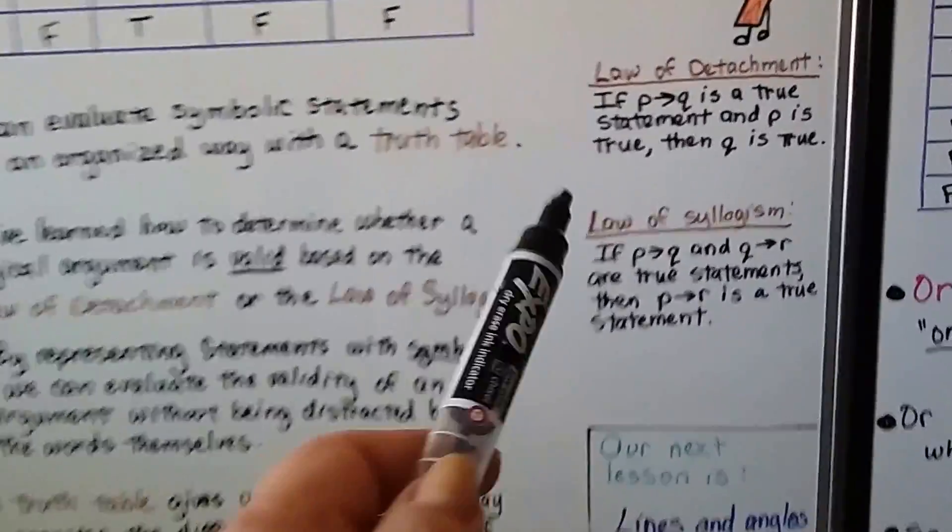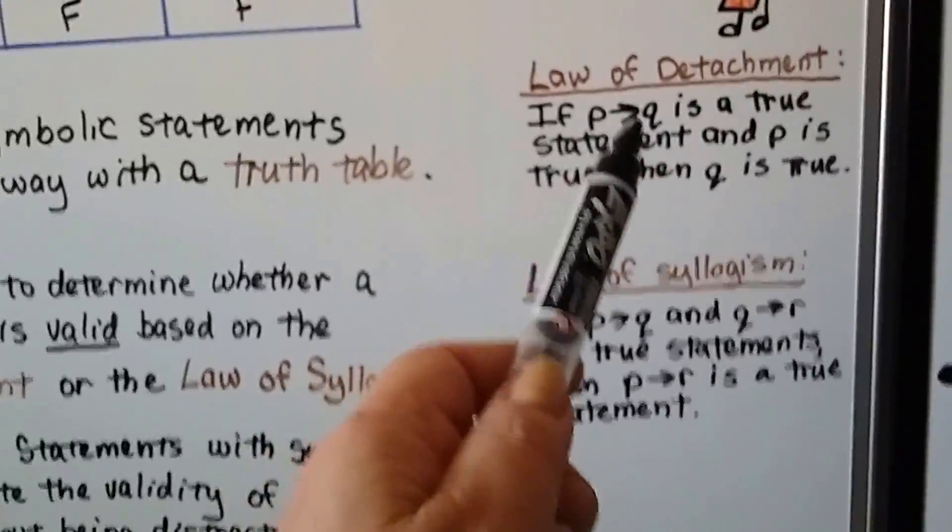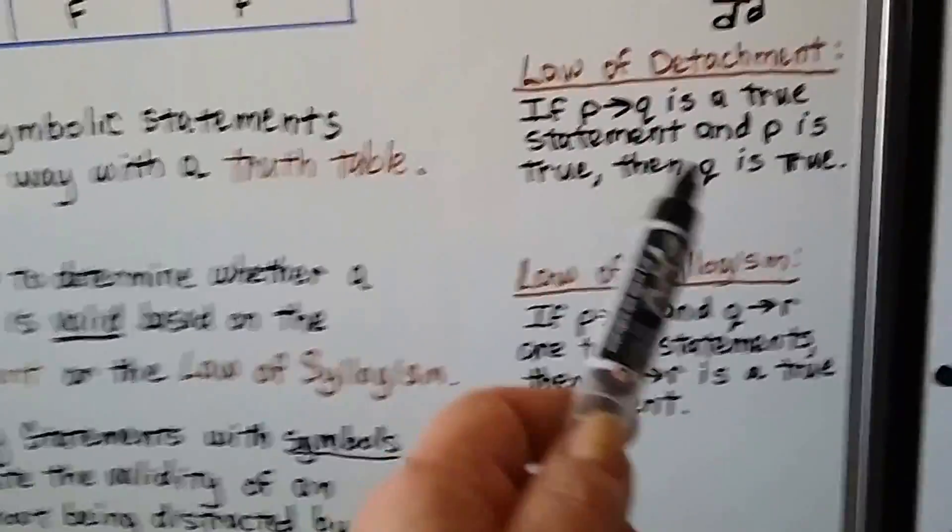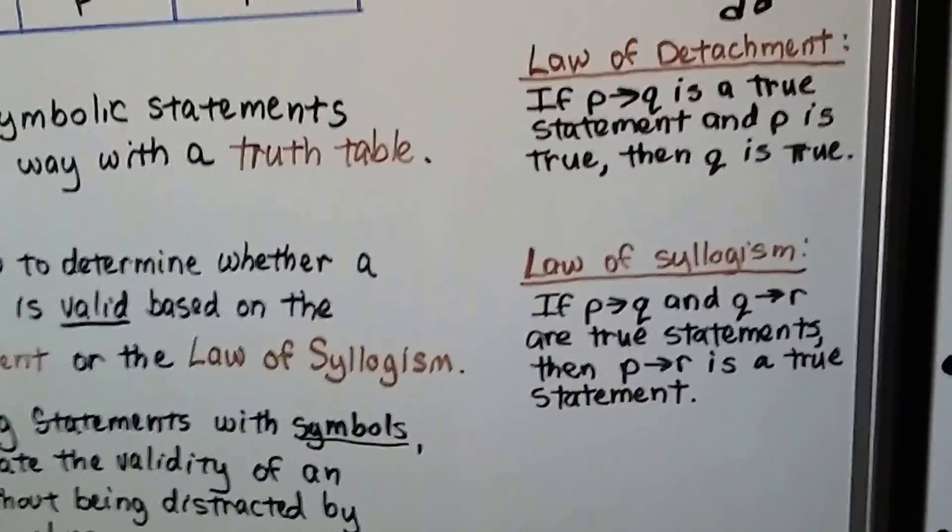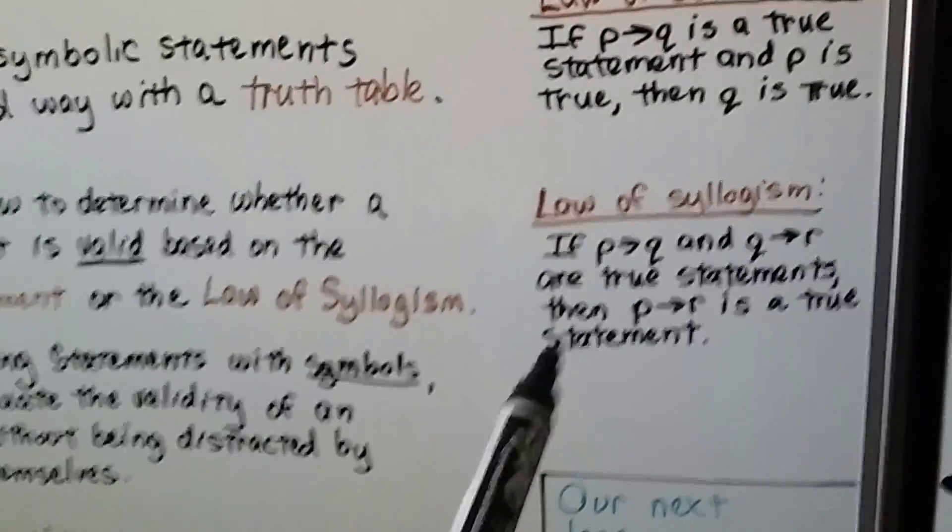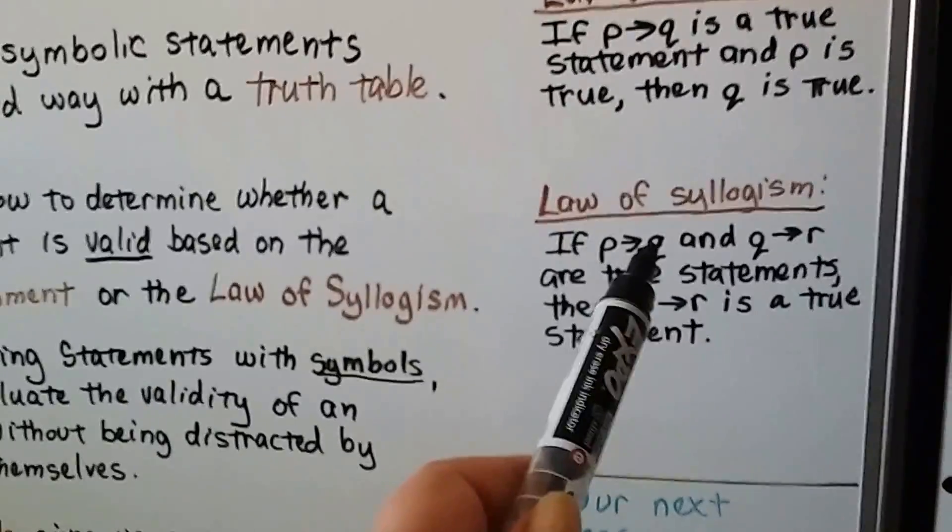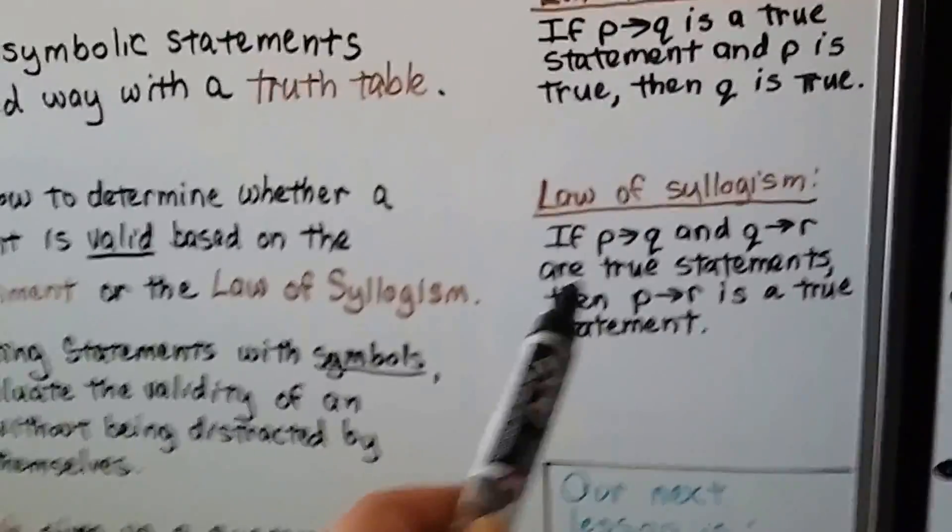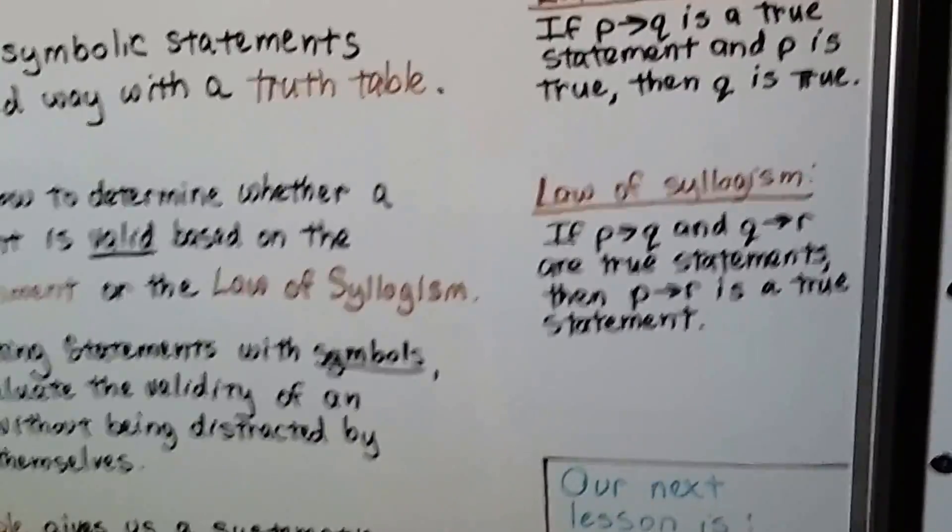If you don't remember what that is, the law of detachment says if P therefore Q is a true statement and P is true, then Q is true. And the law of syllogism says if P then Q and Q then R are true statements, then P then R is a true statement.